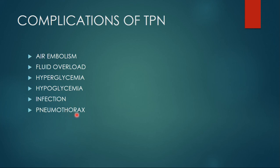The next complication is pneumothorax, also known as a collapsed lung. Pneumothorax is one of the most frequent mechanical complications during central venous catheter insertion. It occurs when air leaks into the space between your lung and the chest wall.